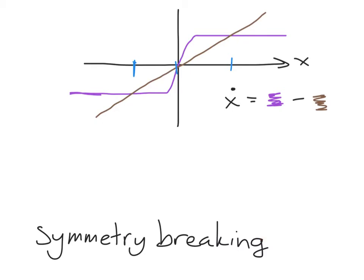We're going to start with the normal case first, which is that we have a perfectly symmetric system, and my differential equation is x-dot equals the purple function minus the brown function. Here's the purple function - it's supposed to be completely symmetric, but it's hand-drawn. And then here's the brown function, and there are three intersections, so we have three fixed points marked in blue. To think about their stability, out here the brown function is above the purple, so purple minus brown will be negative, so x-dot is negative, resulting in an arrow going this way.